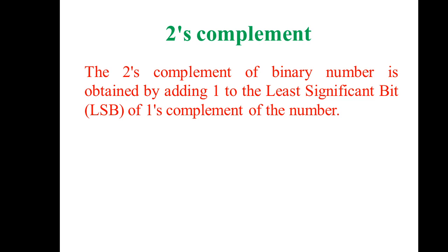The main procedure to find out the two's complement is: first, find out the one's complement of the given binary number. Second, add one to the least significant bit of that one's complement. Then perform the binary addition within it, and you will get the two's complement.